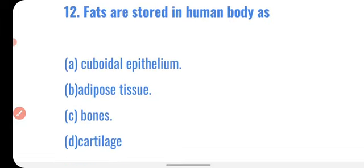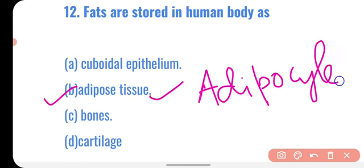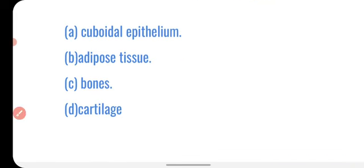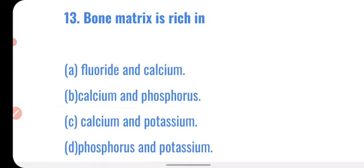Question number twelve: fats are stored in the human body as — cuboidal epithelium, adipose tissue, bones, or cartilage? In adipose tissue, fats are stored in cells called adipocytes. So fats are stored in the human body as adipose tissue.